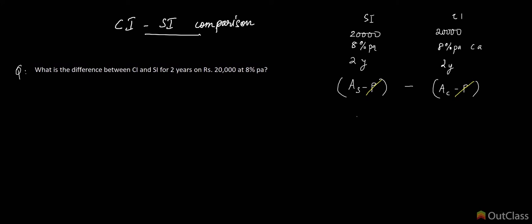what you want is AC minus AS. I know it says AS minus AC, but the amount under compound interest is going to be bigger, so AC minus AS is what you're trying to find. Instead of finding the difference between CI and SI, you can find the difference between the amounts, which is easier. The amount under CI is